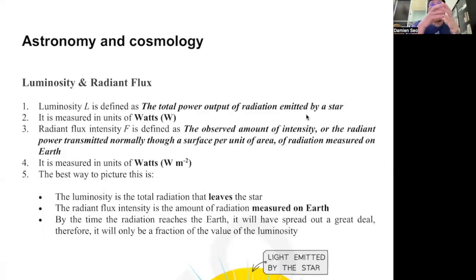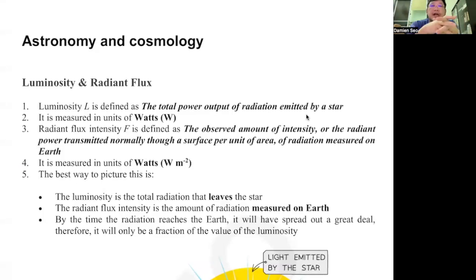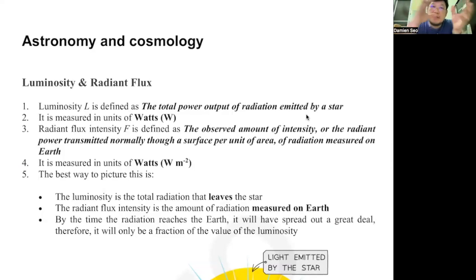The sun is a type of star. Therefore, fusion will take place at the surface, and you will emit all the radiation. So the total power emitted is called your luminosity. The unit for luminosity is watts, because it's actually power.